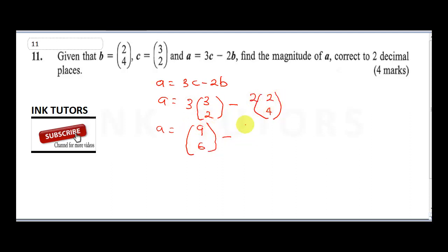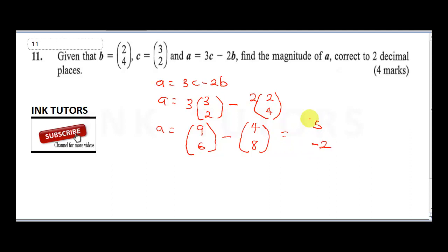Then minus: 2 times 2 is 4, and 2 times 4 is 8. Subtracting, we get 9 minus 4 equals 5, and 6 minus 8 equals minus 2. So a is the vector (5, -2).